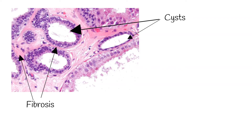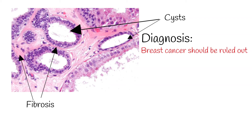The exact cause of fibrocystic breast is not known, but it is tied to hormone-level fluctuation. The condition usually subsides after menopause and is closely related to the menstrual cycle.